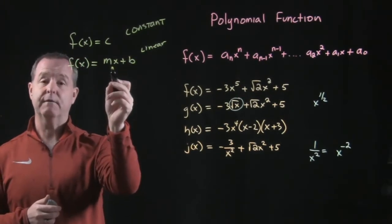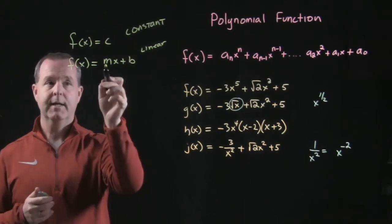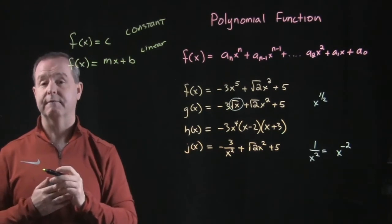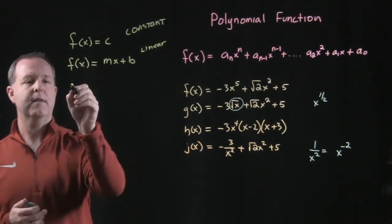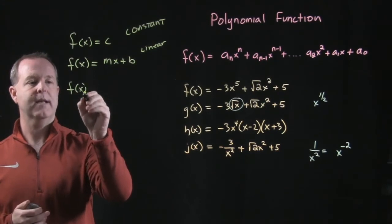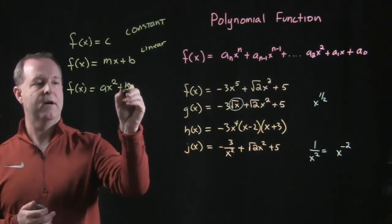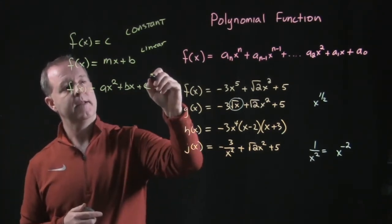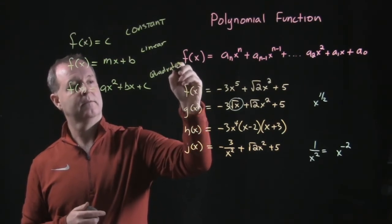This, for it to be a linear function, we want to make sure the coefficient in front of this x is not zero. Because if it was zero, what kind of function would we have? Yeah, we would just have a constant function. And another function that we've already kind of played with and kind of got used to is a function in this form. And what kind of a function is that? Yeah, that's a quadratic.